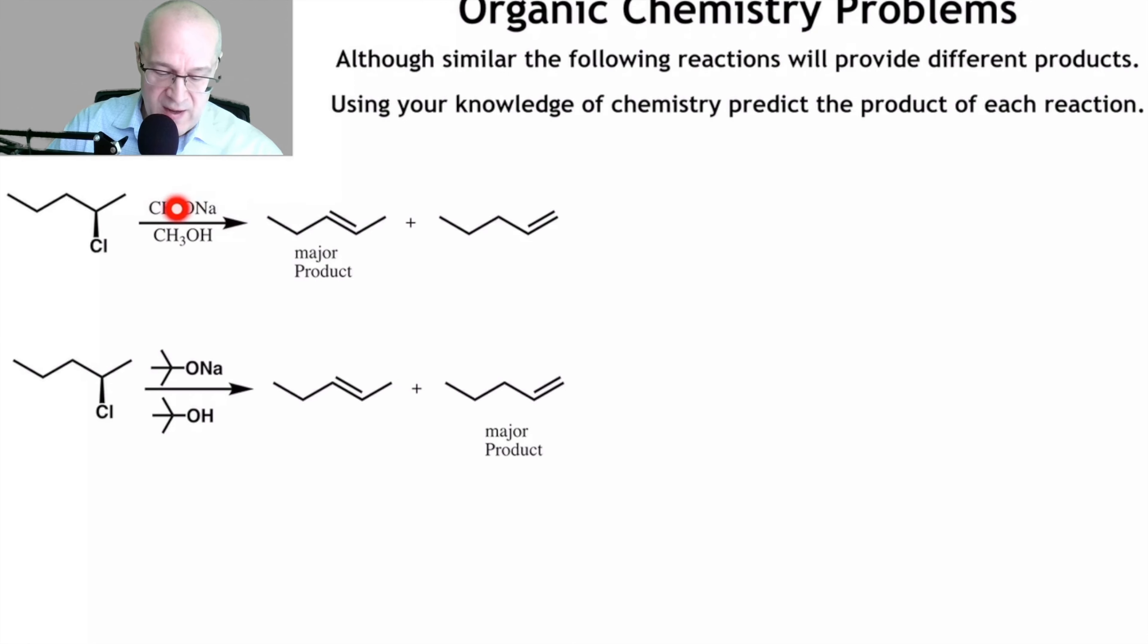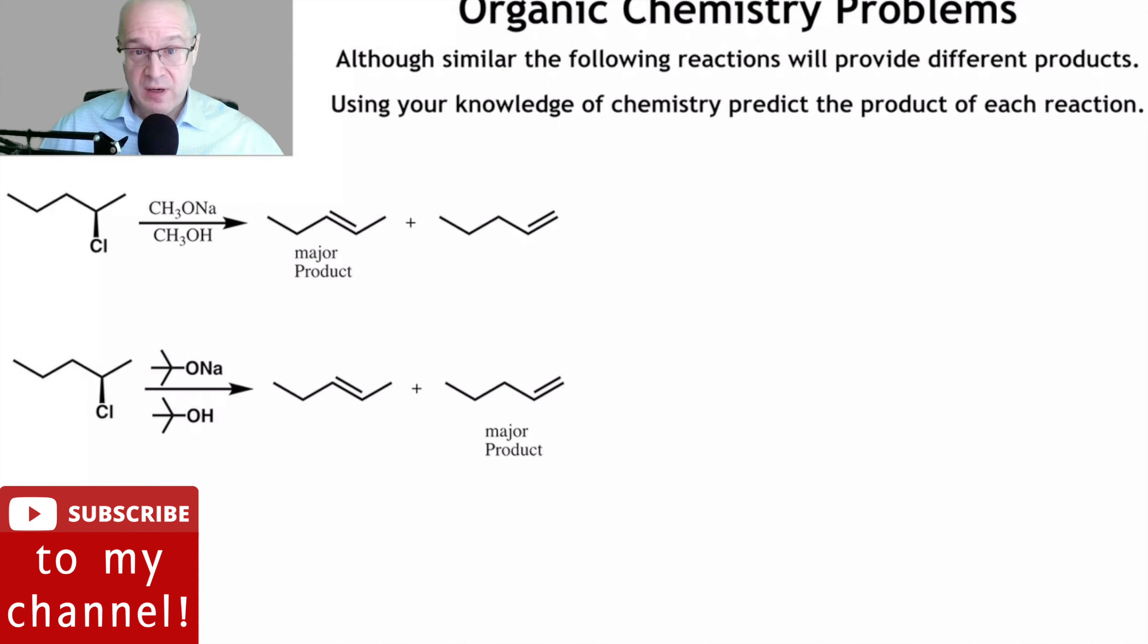Notice the small base gives us the more substituted product, the Zaitsev product as the major. The minor is the least substituted, that's the Hoffman product. The Hoffman product is the least substituted double bond. The Zaitsev is the most substituted double bond.